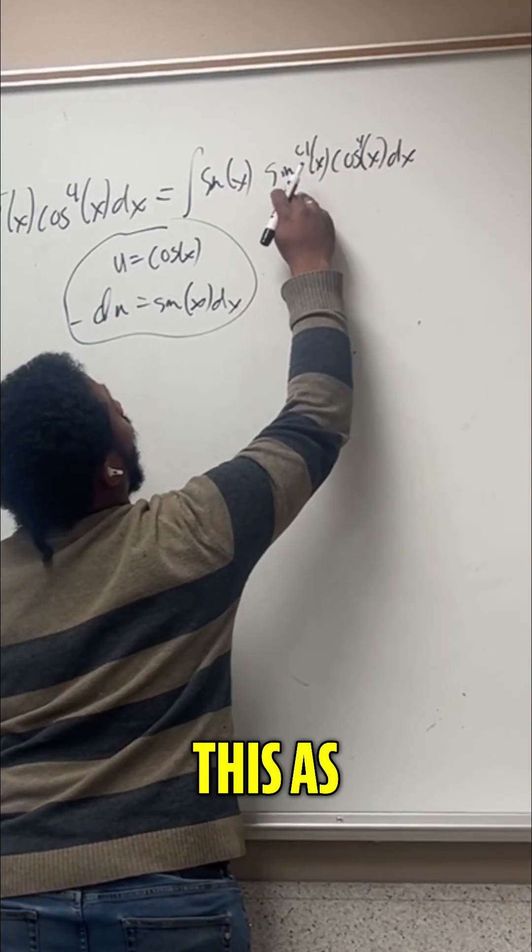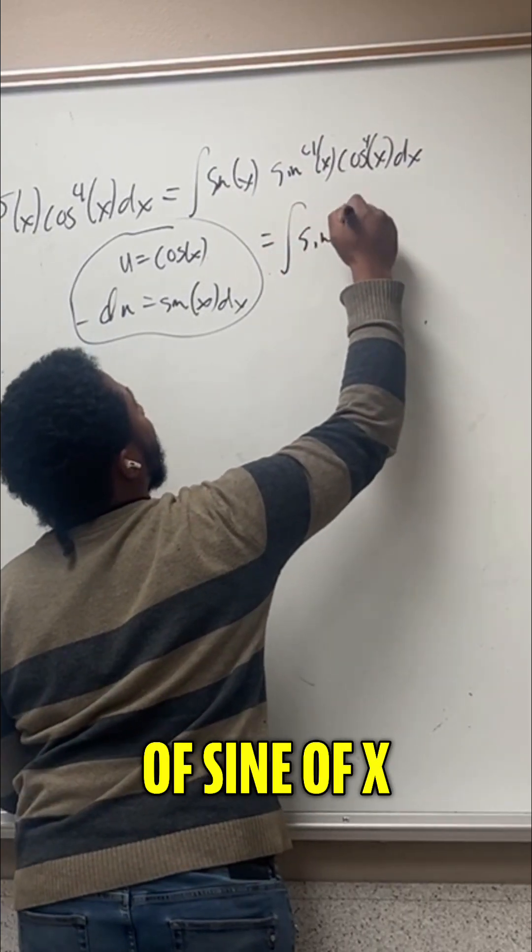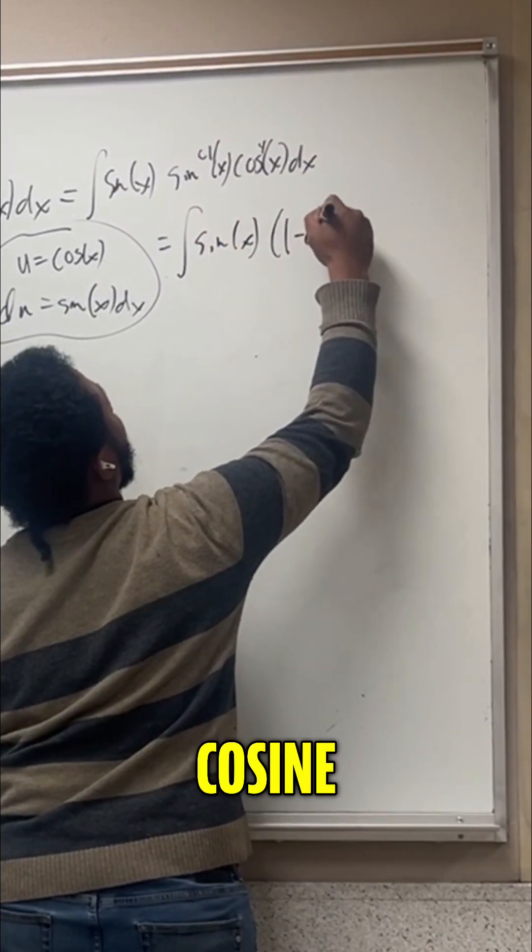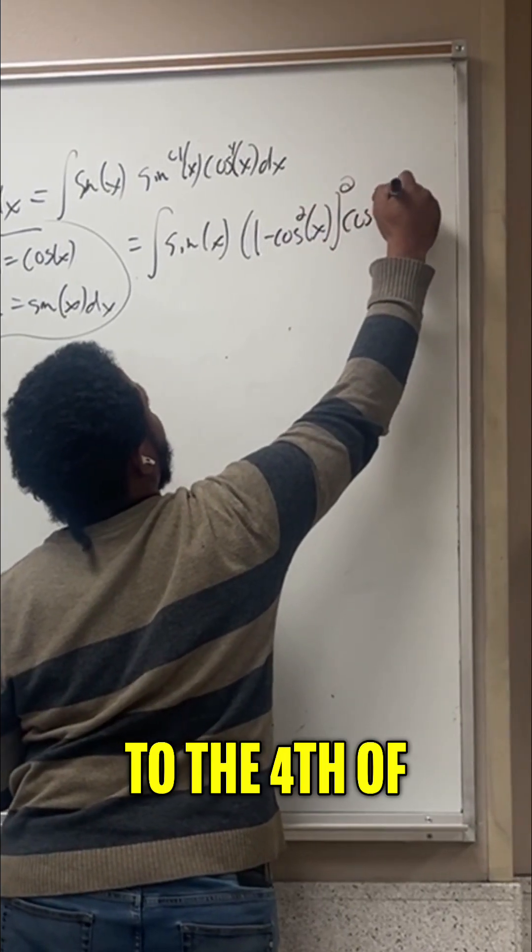And so to rewrite this, we'll write this as one minus cosine squared, squared. So this becomes the integral of sine of x times one minus cosine squared of x, squared, times the cosine to the fourth of x dx.